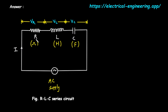The first component is a resistor, represented by the letter R and a zigzag symbol. Its property is resistance, measured in ohms. A resistor's main job is to impede the flow of current, converting electrical energy into heat. It behaves the same way in both direct current (DC) and alternating current (AC) circuits.